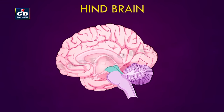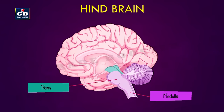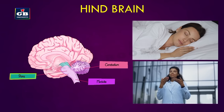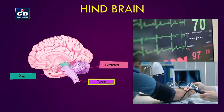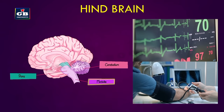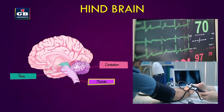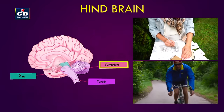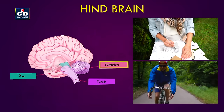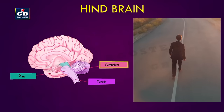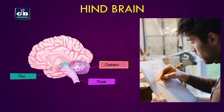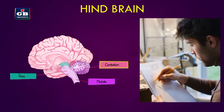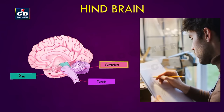The hindbrain has three parts: pons, medulla oblongata, and cerebellum. These control involuntary functions. Pons controls the sleep-wake cycle and breathing. Medulla controls heart rate, breathing, blood pressure, and more involuntary functions. The cerebellum is responsible for the precision of voluntary actions and maintaining posture and balance of the body.